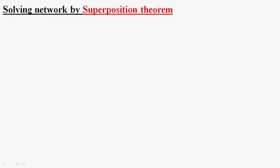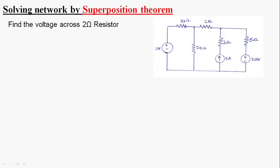Hi guys, today we are going to solve a network by using the superposition theorem. For that we are choosing this network. The question is: find the voltage across the 2 ohm resistor by using the superposition theorem. Let us say V_2ohms is the voltage across this 2 ohm resistor.